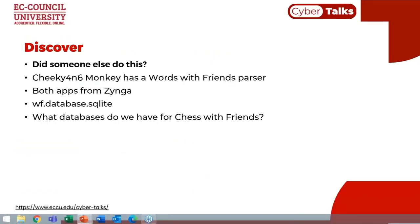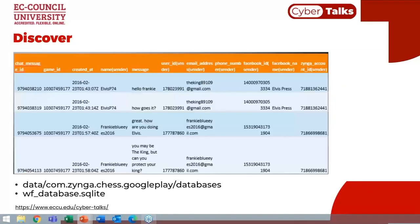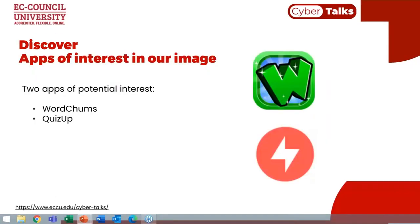Once I've identified the applications in my discovery phase, I look to see if somebody else has already written a parser. For Chess with Friends, there weren't any parsers, but there was one for Words with Friends — both made by Zynga — written by Cheeky Forensics Monkey. When I looked at the application, the database had exactly the same name, so I tried the parser and it worked. We can see that Frankie Blue Eyes and Elvis P74 are communicating with each other.